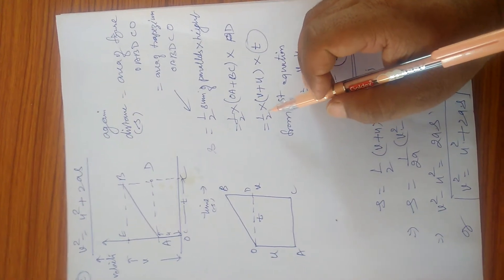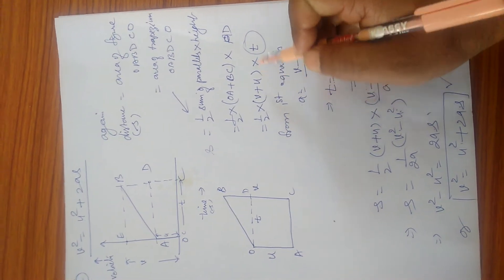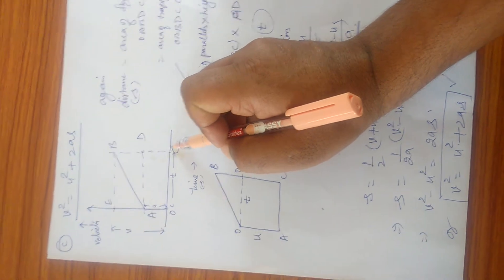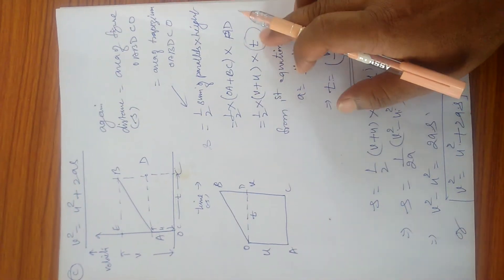So that is equal to 1/2 into (v + u) into t. This is u, and BC is v, so (v + u) into t.